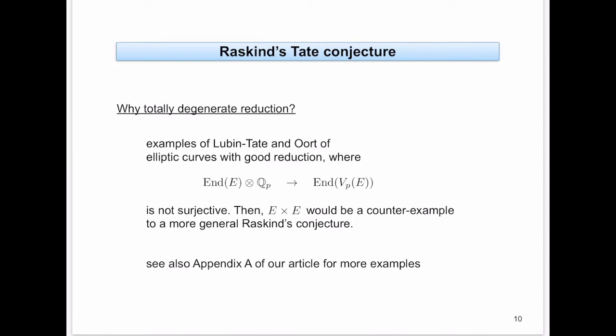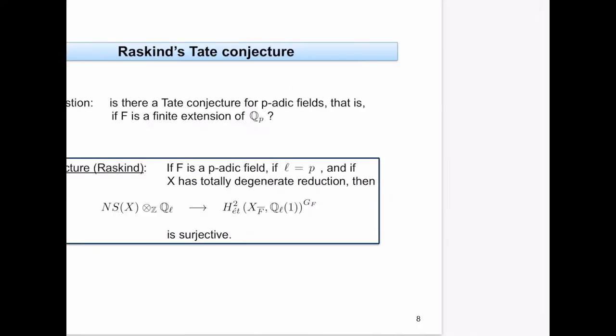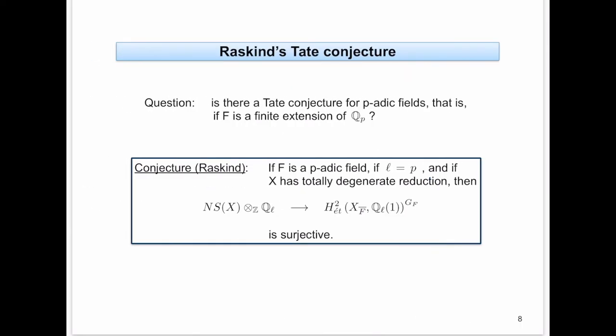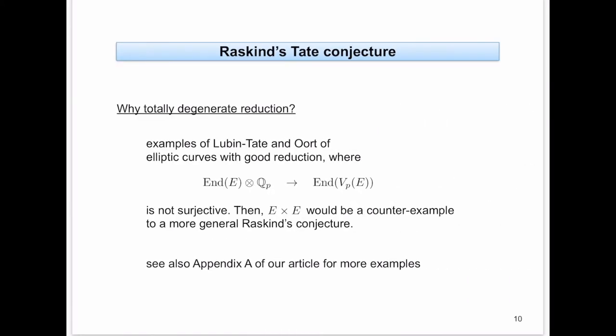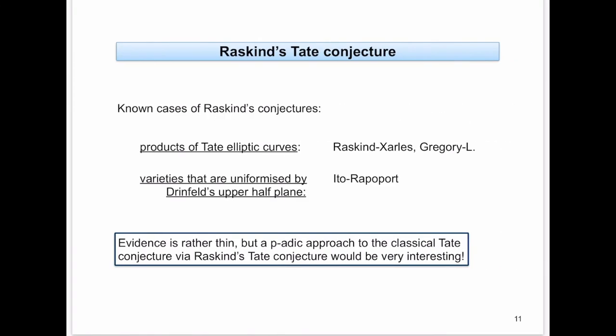What we've been saying is that if we look at this formulation, we must assume L equals P, and X must be in some sense special — it can't have good reduction. Do we know Raskind's conjecture in some examples? The answer is yes. It is known for products of Tate elliptic curves due to Raskind and Scholl, who did it for two curves.